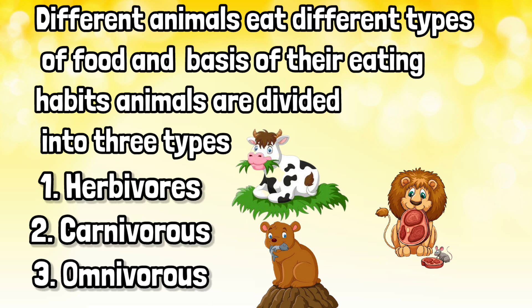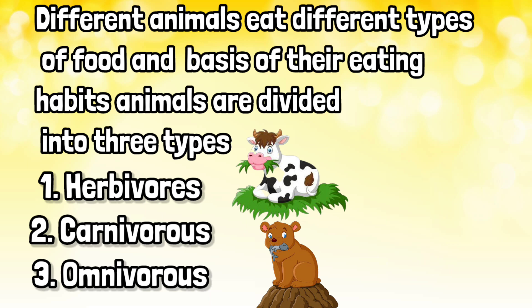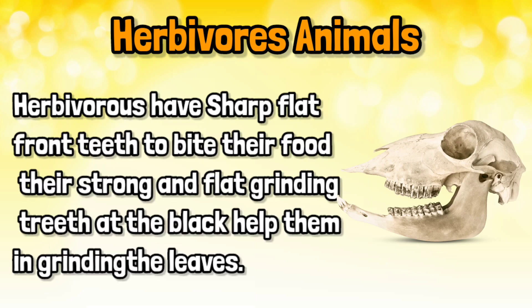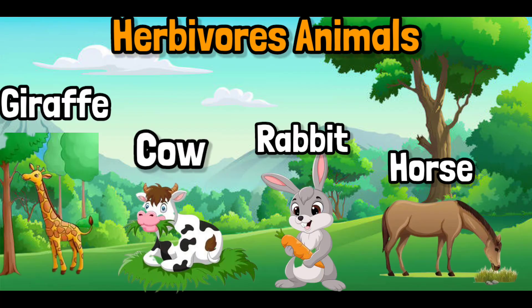Let's see Herbivores. Animals that eat only plants and plant products are called plant-eating animals or Herbivores. Herbivores have sharp, flat front teeth to bite their food, and strong flat grinding teeth at the back that help them in grinding the leaves.